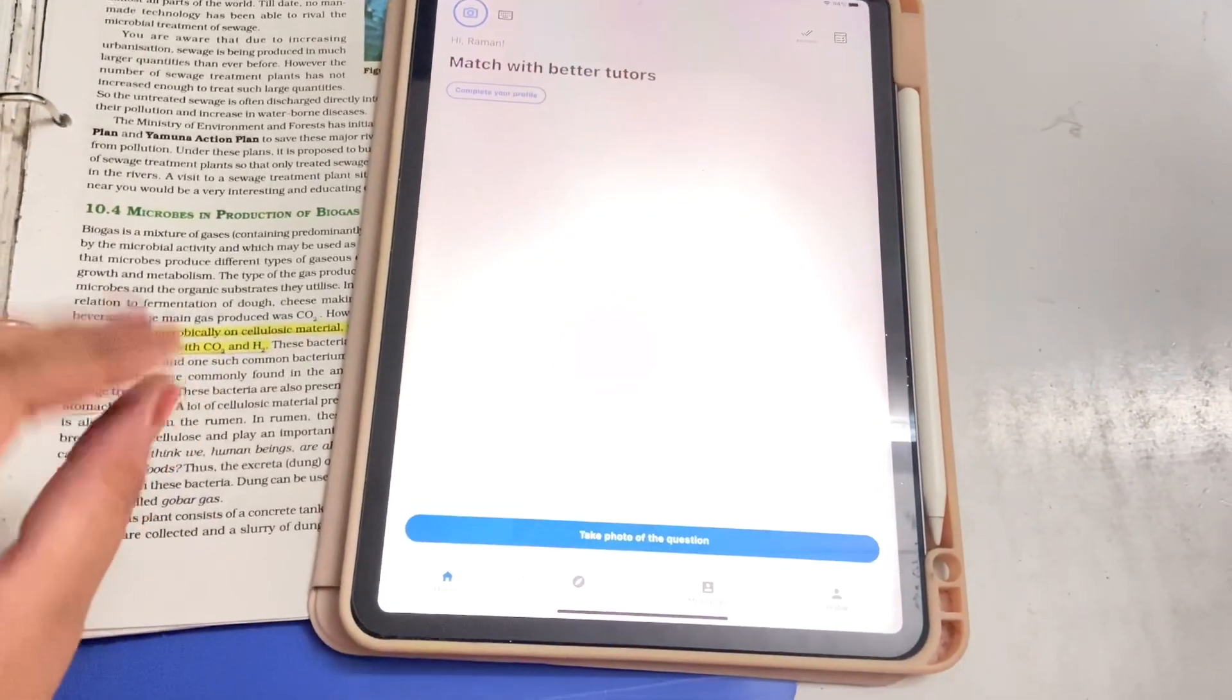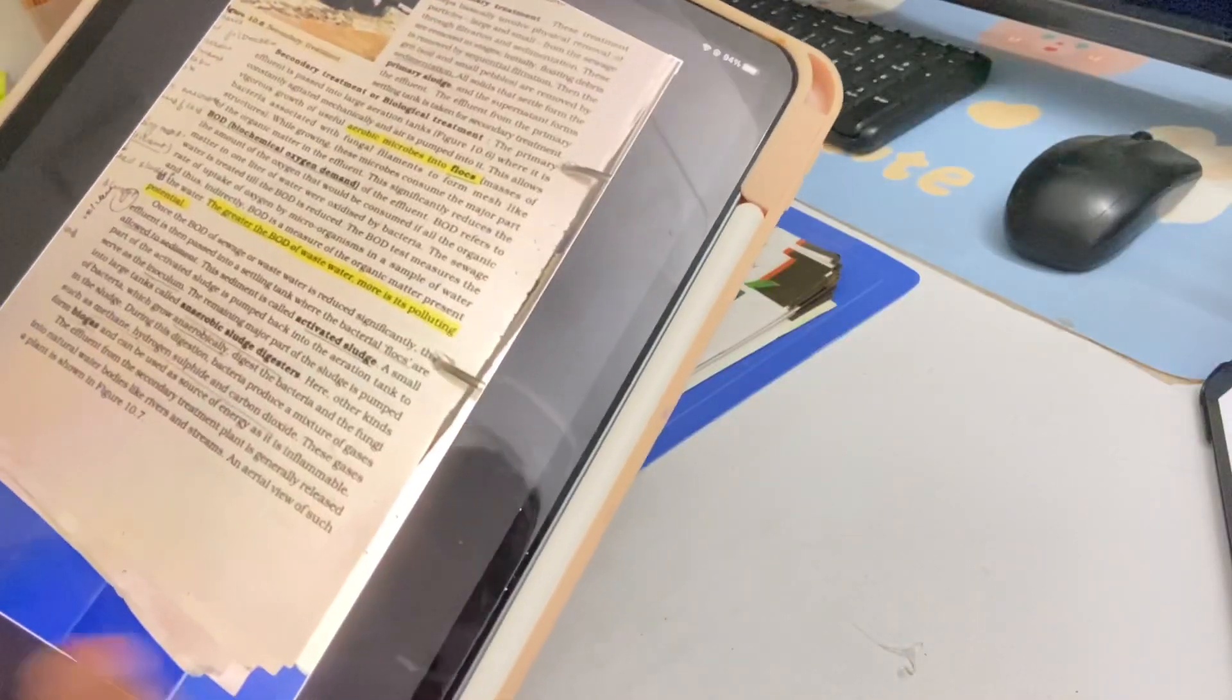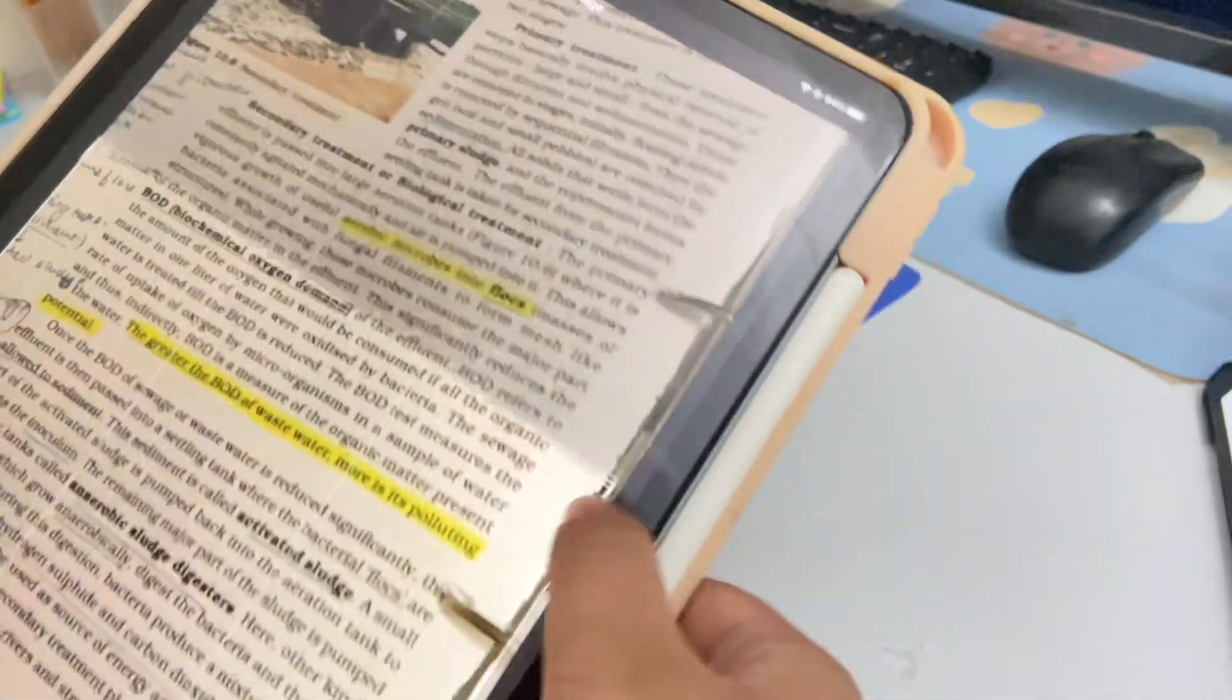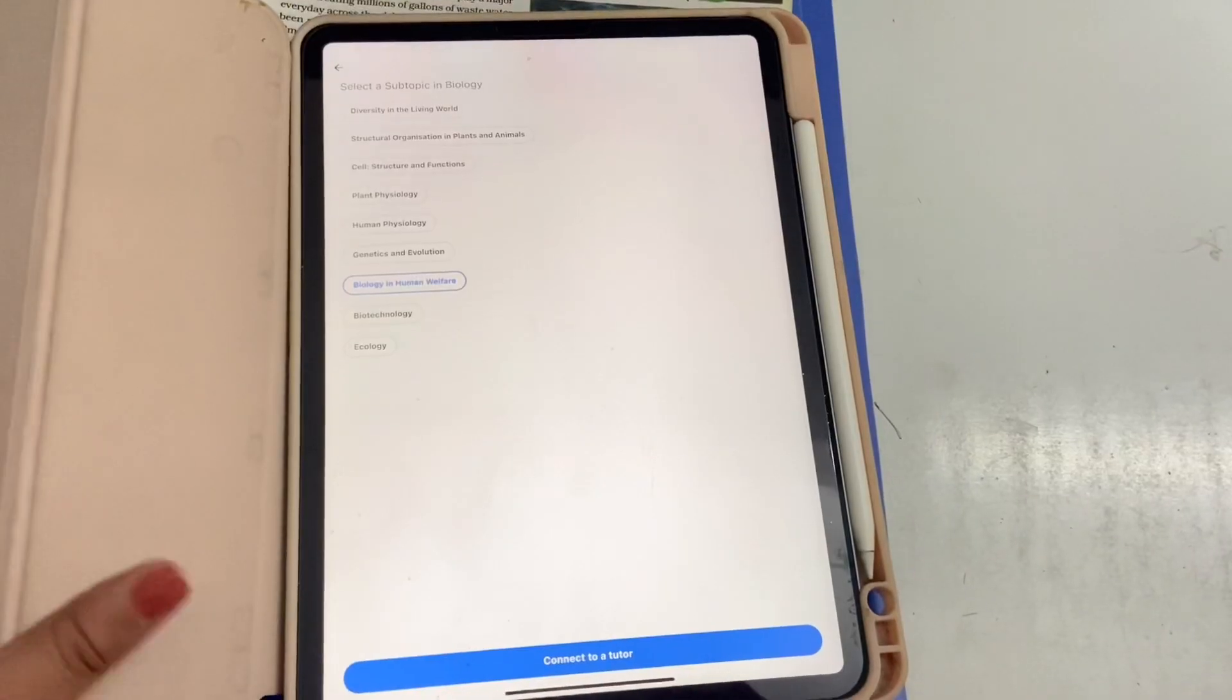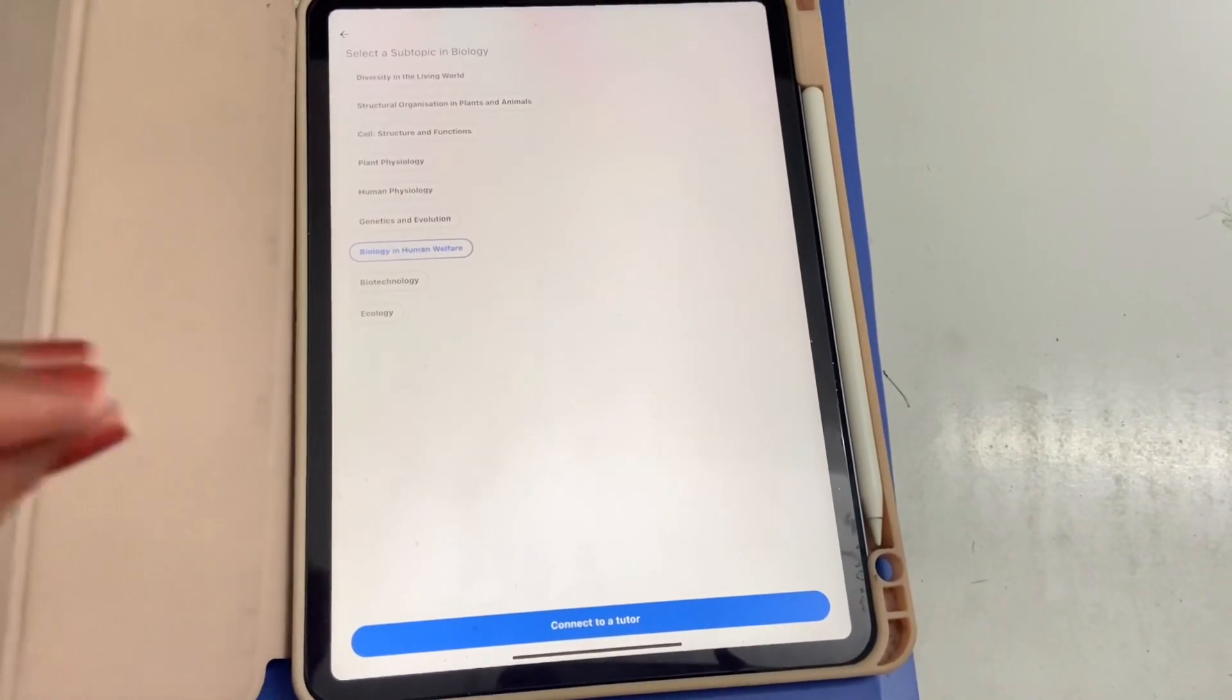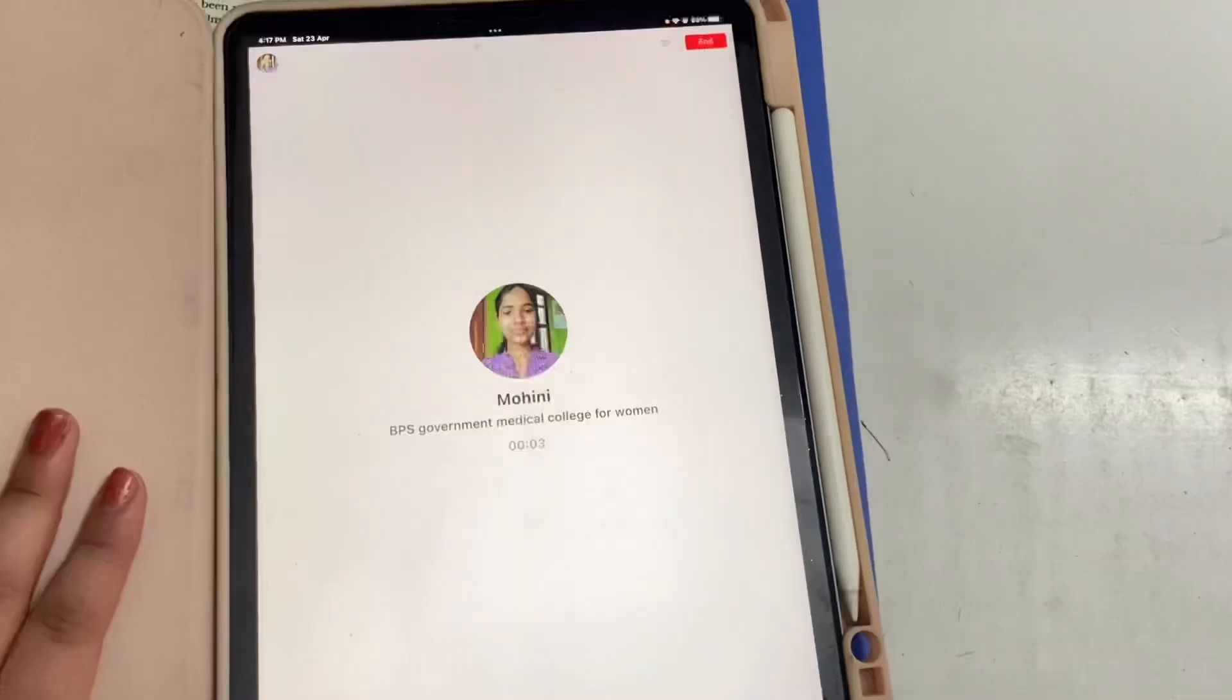First of all I just need to take a photo of the concept which is not clear. As you guys can see I have taken the photo, now I just need to crop it to the concept which is not clear. Now I will select the topic and the subtopic. So now this app will connect me to a tutor who will clear my concept. The great part is that it will connect me with the tutor only within 60 seconds.